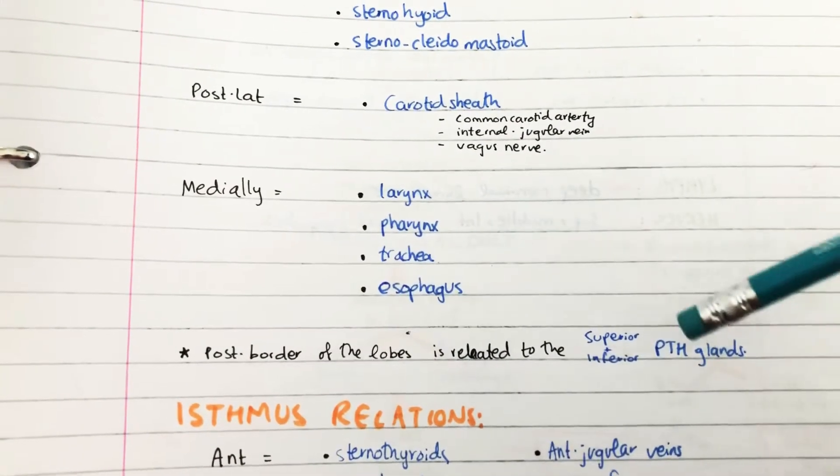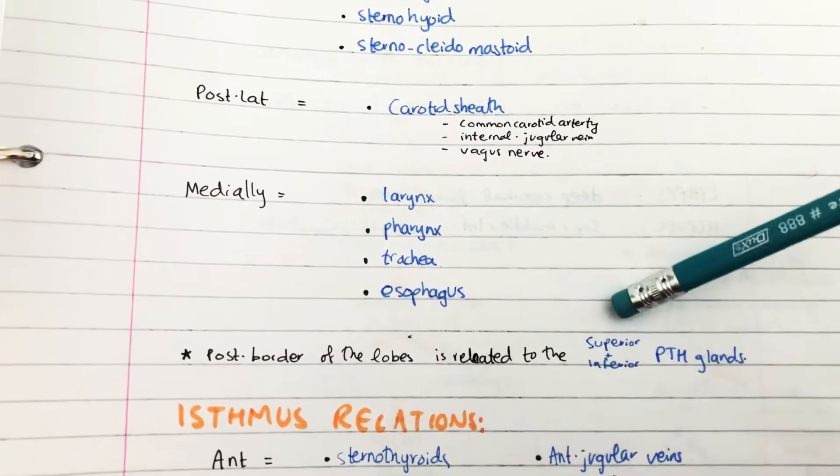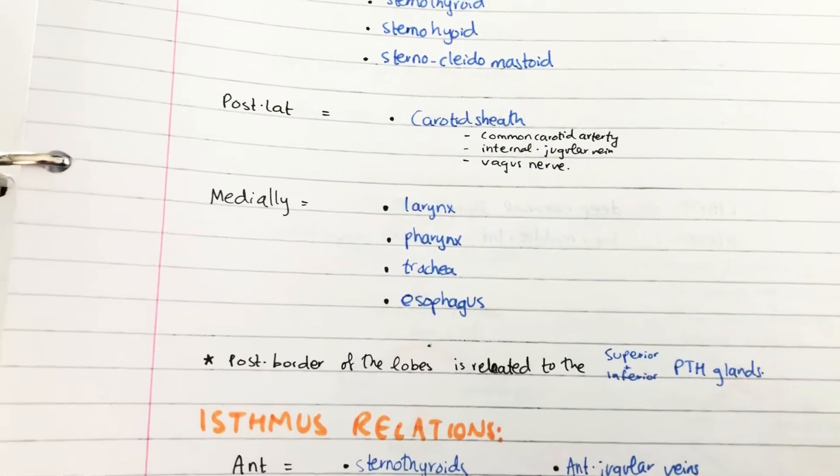And the posterior border of the lobes is related to the superior and inferior parathyroid glands.